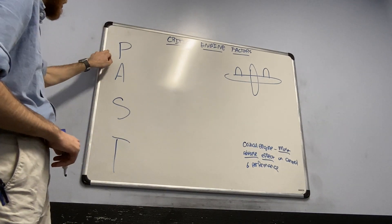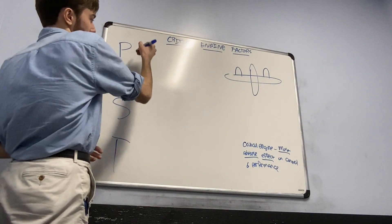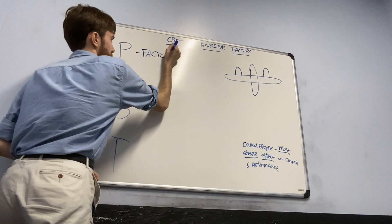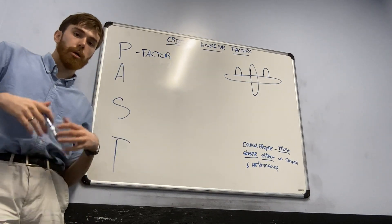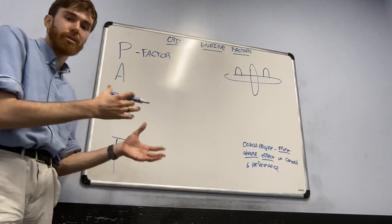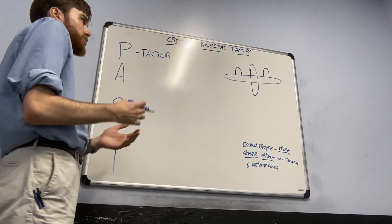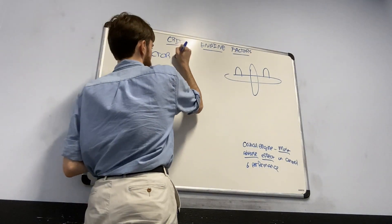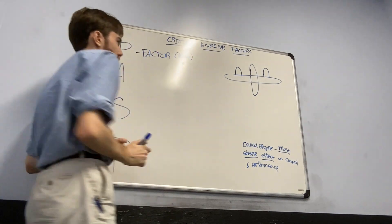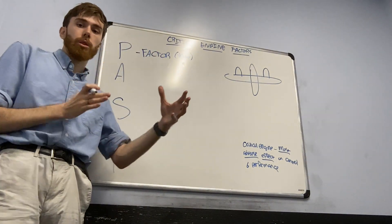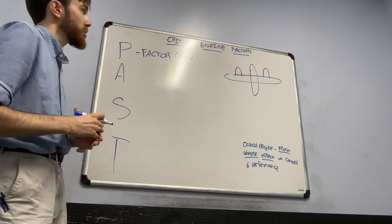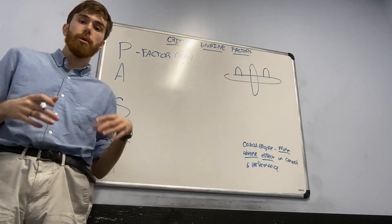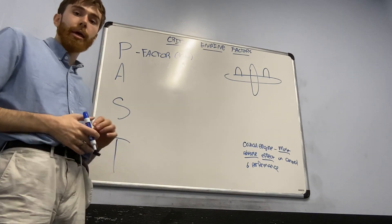So we'll start with the first one: P-factor. That is a term that should be very familiar by this point in your training, as it's one of the big left-turning tendencies that we look at throughout private training, commercial training, and maneuvers. P-factor is going to be a yaw force, so it's going to have an impact on the direction that the plane's nose turns.